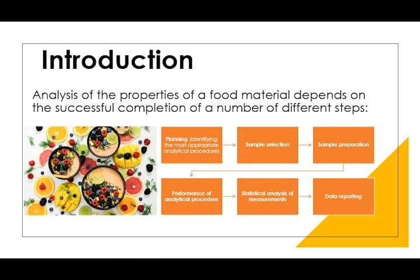Once you have done your sample prep, you want to perform your analysis. This depends on what composition or properties you want to analyze, and you will decide which techniques to use. Afterwards, you need to run a statistical analysis for your data to be acceptable. From here, you can interpret your data and see if it achieved the objective set during your sample planning. Lastly, you report the data that you have obtained.